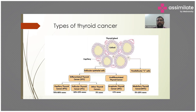Based on the cell of origin, we can differentiate whether it is a follicular epithelial cell derived cancer or a parafollicular C cell derived cancer. The parafollicular derived cell gives medullary carcinoma of thyroid, and from the follicular cells come the differentiated thyroid cancers — papillary, follicular, and others like Hurthle cell and tall cell variants — as well as the undifferentiated type, generally called anaplastic cancer.